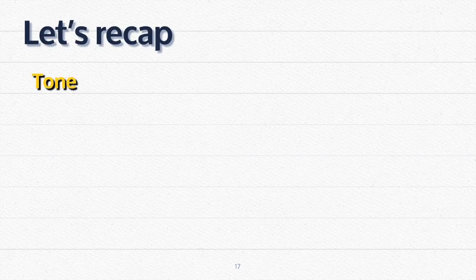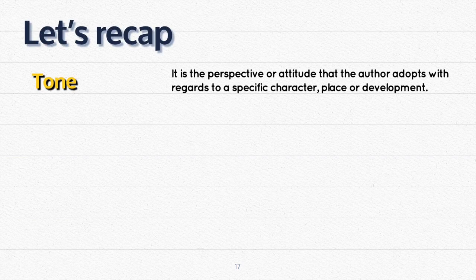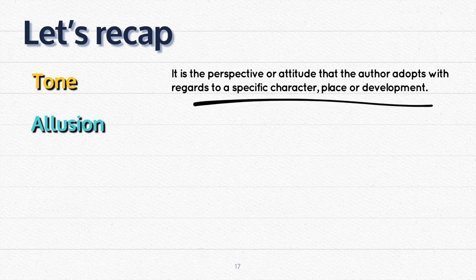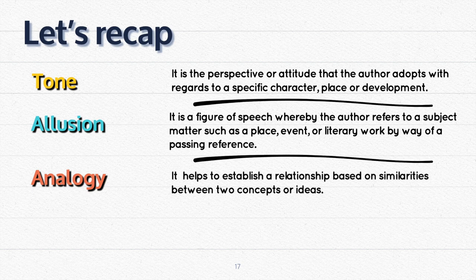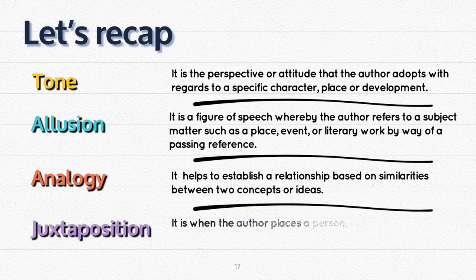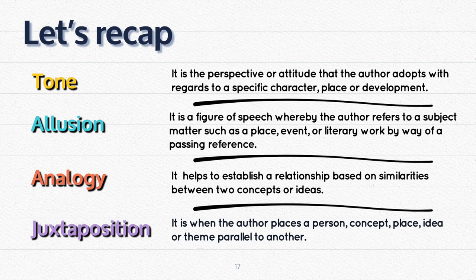Now let's recap. We talked about tone — a perspective or attitude that the author adopts with regards to a specific character, place, or development. Allusion — a figure of speech whereby the author refers to a subject matter such as a place, event, or literary work by way of a passing reference. Analogy — it helps to establish a relationship based on similarities between two concepts or ideas. And finally, juxtaposition — when the author places a person, concept, place, idea, or theme parallel to another.